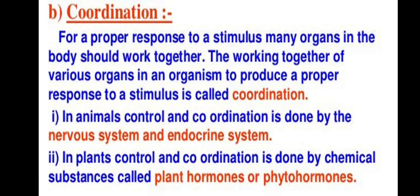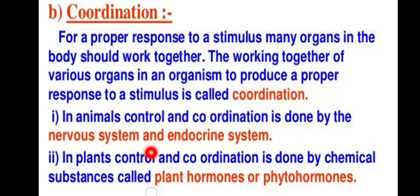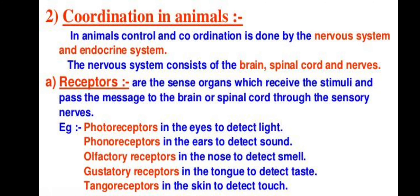We have talked about coordination — working together of two or more organs to produce a proper response to a stimulus is called coordination. In animals, control and coordination is done by the nervous system and the endocrine system. The nervous system involves neurons, and the endocrine system involves hormones. In plants, there is no nervous system, so in plants control and coordination is done by chemical substances called hormones, also called plant hormones or phytohormones. The nervous system in animals consists of nerves, brain, and spinal cord.